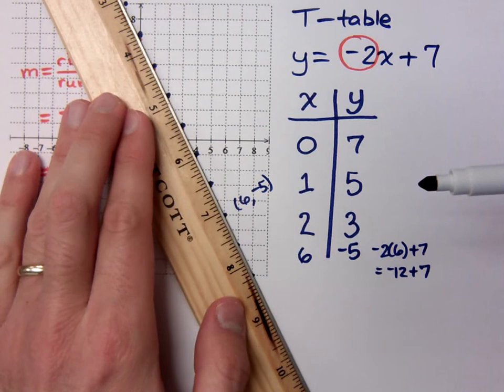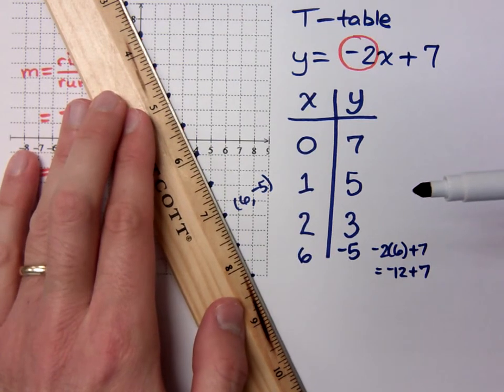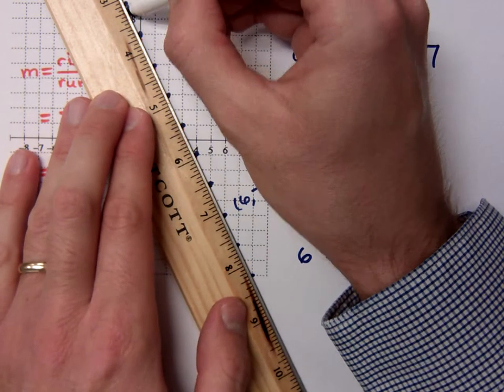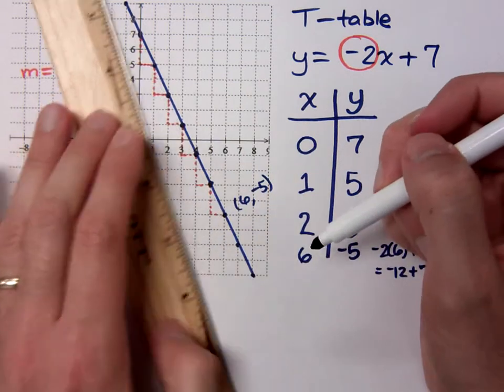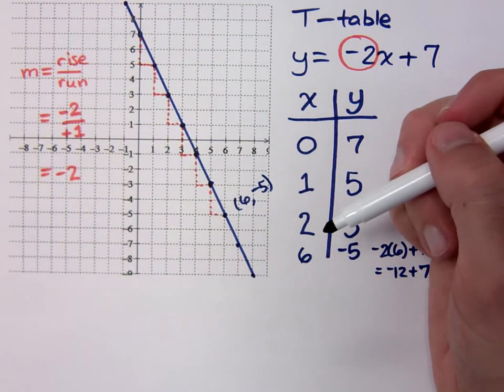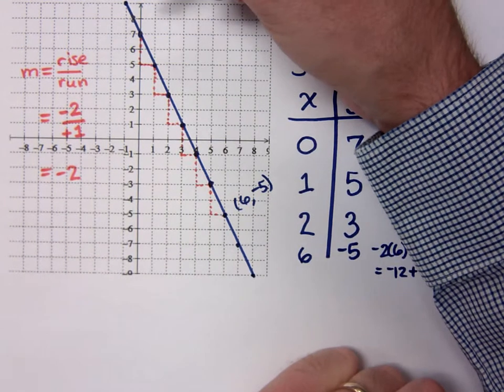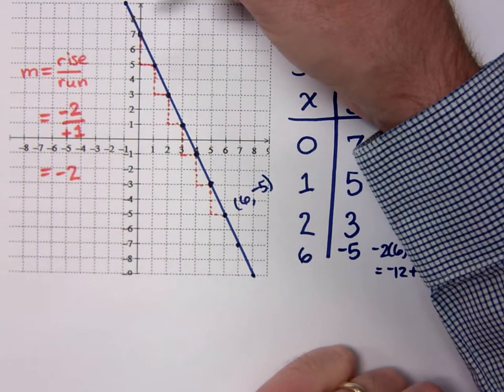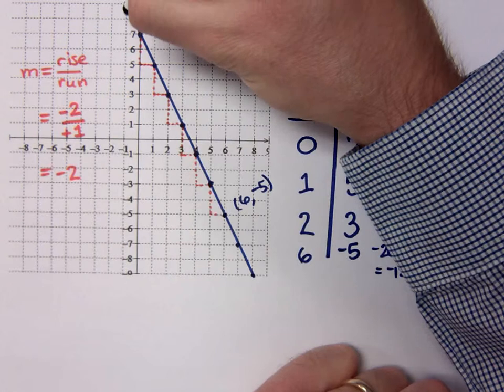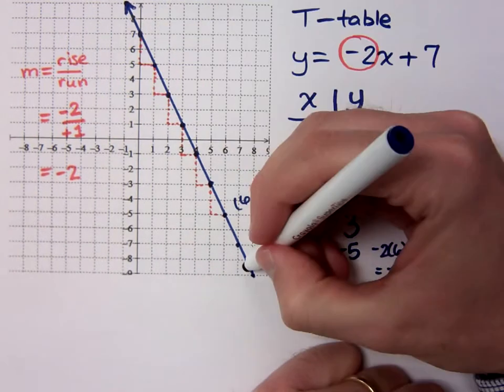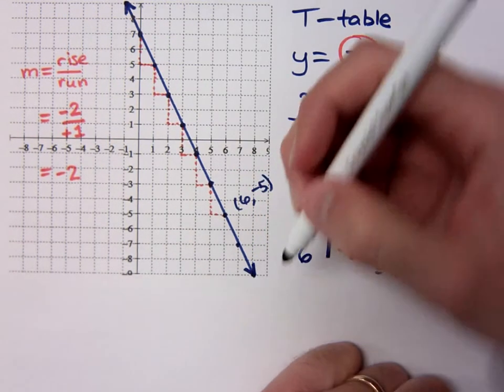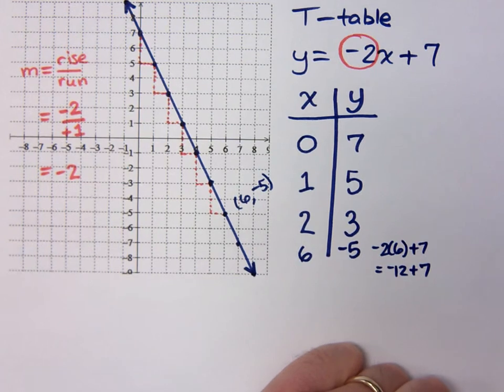So we're good. We just need to connect the dots. Now, here's something you need to be aware of whenever you're graphing. When you graph, you don't graph line segments when we're trying to graph lines. To show that we're graphing a line, you put arrows at the end of these lines. If you don't, you will lose points. Are you with me on that?